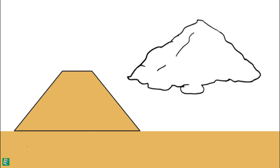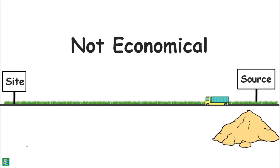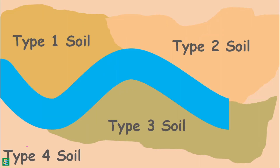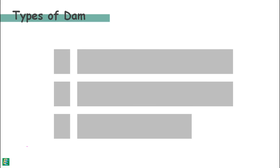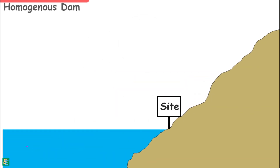To construct an earth dam, we need a large amount of soil, so we use soil that is easily available near the construction site, as it is not economical to transport large quantities from a distant source. Depending on the type of soil available near the site, earth dams are broadly divided into three categories. The first is the homogeneous dam — if fine-grained soil is available in abundance near the site, the whole dam can be constructed with it.